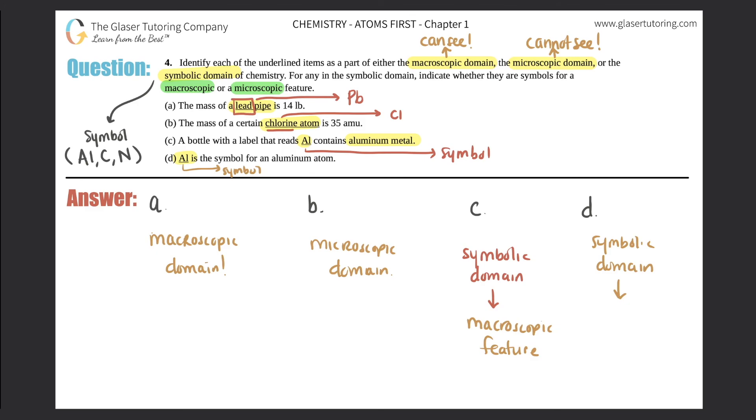It says that Al is the symbol for an aluminum atom. Key in on atom. Can we see actual atoms? No, we cannot. Those are way too small for us. So since we can't see the aluminum atom, this would be the microscopic feature.